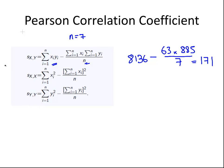That's 595 minus the sum of x to be squared, which was 63 squared, all over 7. A bit of calculator work here. That works out to be 28.